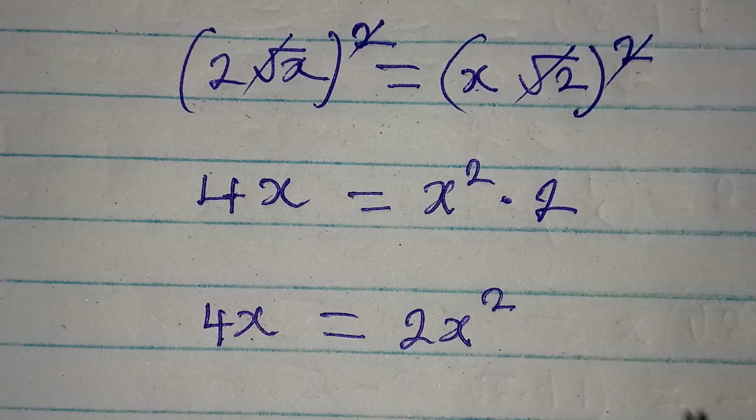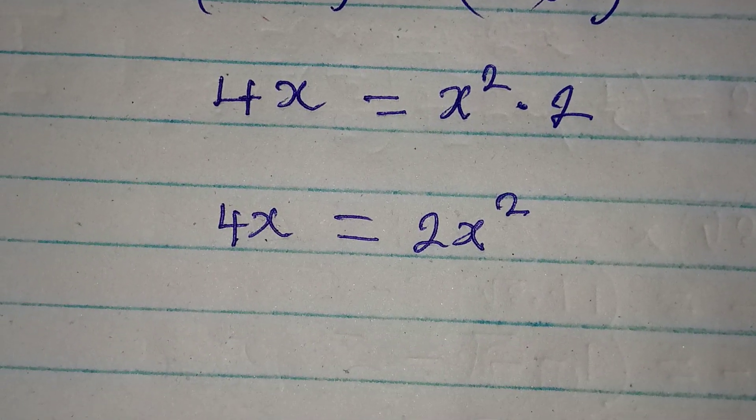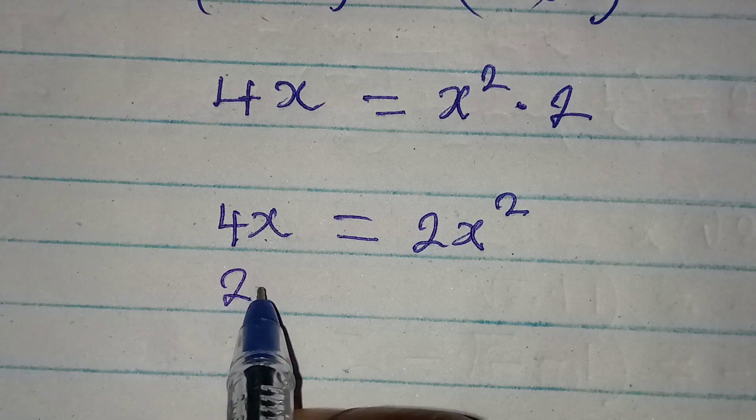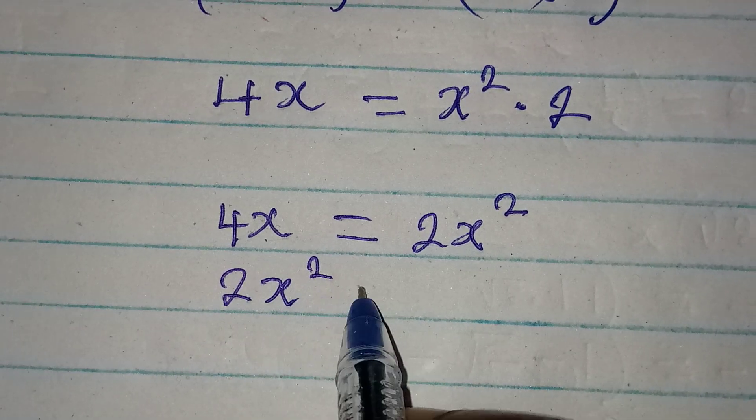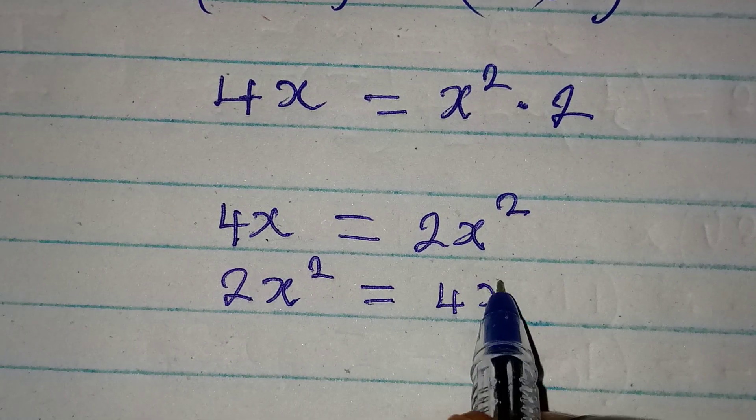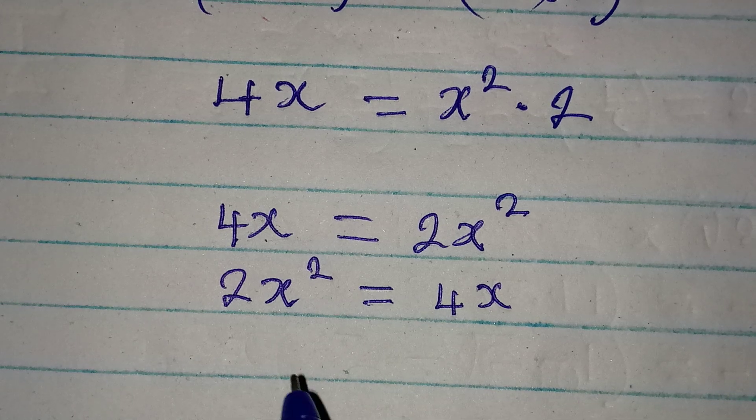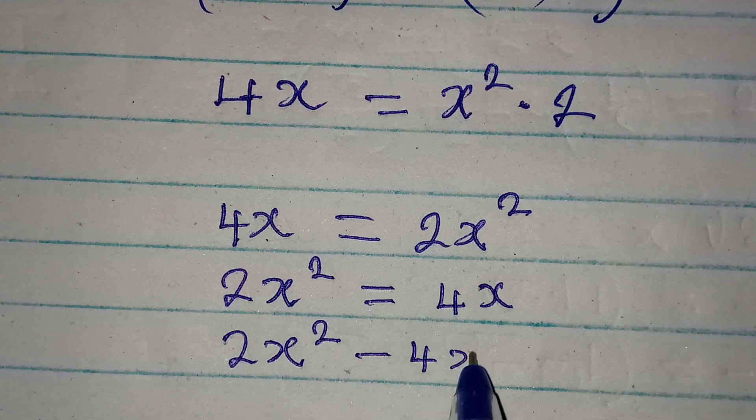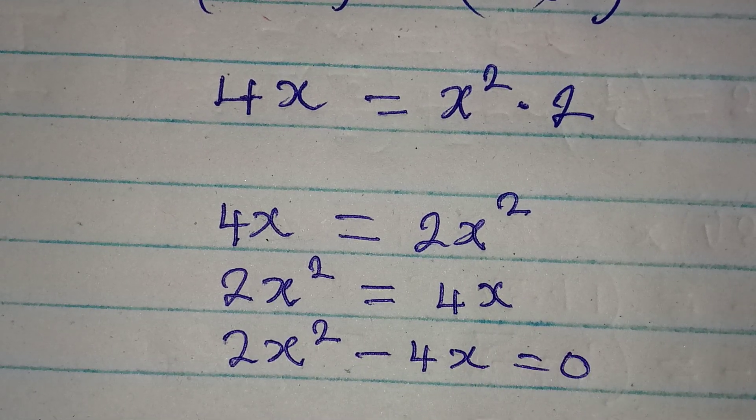If I write this in the other way around, it means that 2x squared is equal to 4x. Bring everything to the left: 2x squared minus 4x is equal to 0.